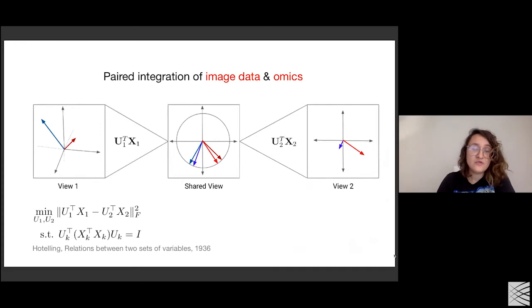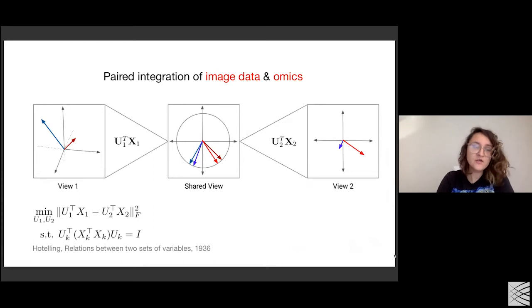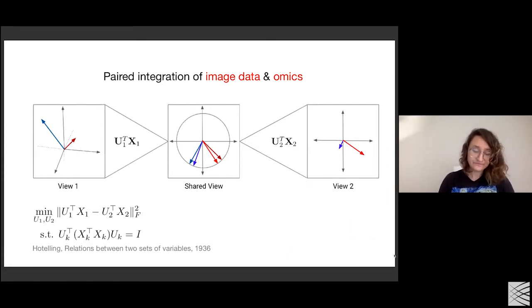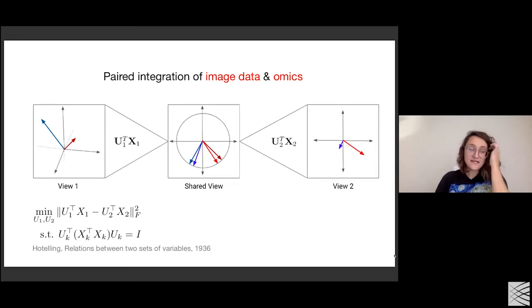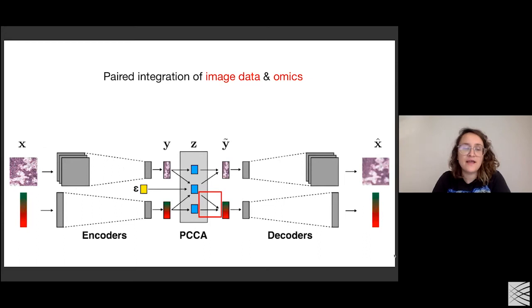One idea that stood the test of time comes from a paper by Hotelling from 1936 about the relations between two sets of variables — more commonly known as canonical correlation analysis. In canonical correlation analysis, the goal is to start with two different matrices of different dimensions and find projections into a joint latent space where the correlation is maximized. This idea is quite powerful, and we make use of it when trying to relate images and gene expression.